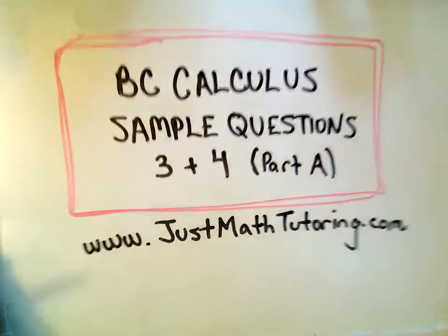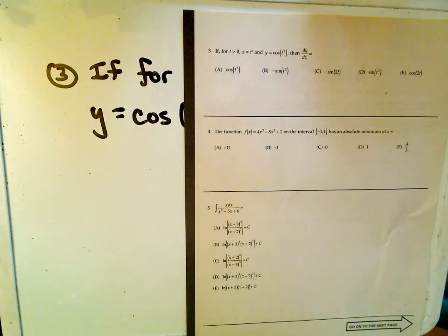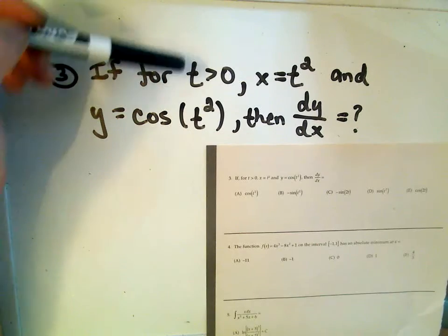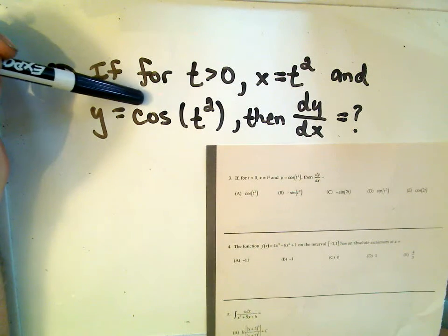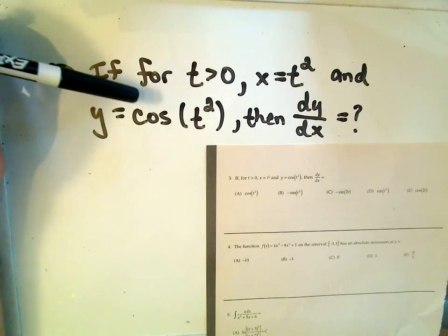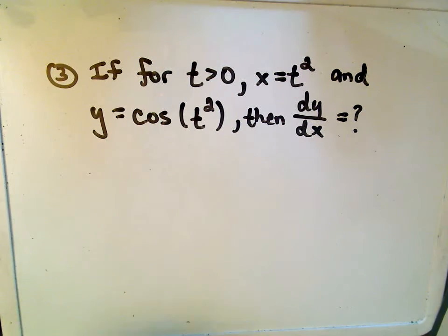Okay, this will be questions 3 and 4 from the BC Calculus Sample Test. Question number 3 basically says, for t greater than 0, if we let x equal t to the fourth and y equal cosine of t squared, then the derivative of y with respect to x equals what?